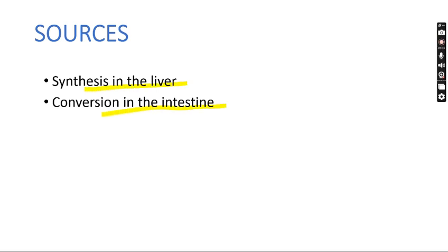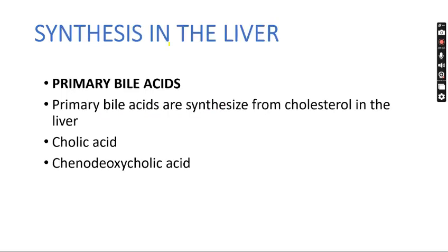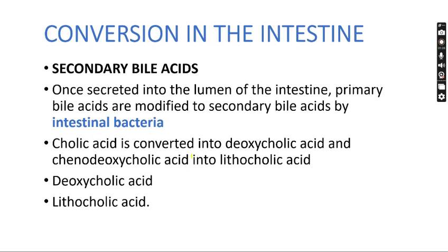Sources of bile acids: they are synthesized in the liver, and their conversion occurs in the intestine after the release of bile from the gallbladder. Primary bile acids are synthesized from cholesterol in the liver — these are cholic acid and chenodeoxycholic acid. They are then converted in the intestine into secondary bile acids, once secreted into the lumen of the intestine.